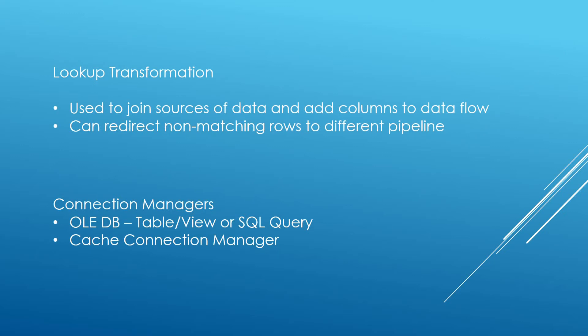The lookup transformation is used to join sources of data and add columns to the data flow. We can also redirect non-matching rows to a different pipeline. The connection managers available are OLEDB — we can select from a table or view or write our own SQL query — and we can also use the cache connection manager as well.